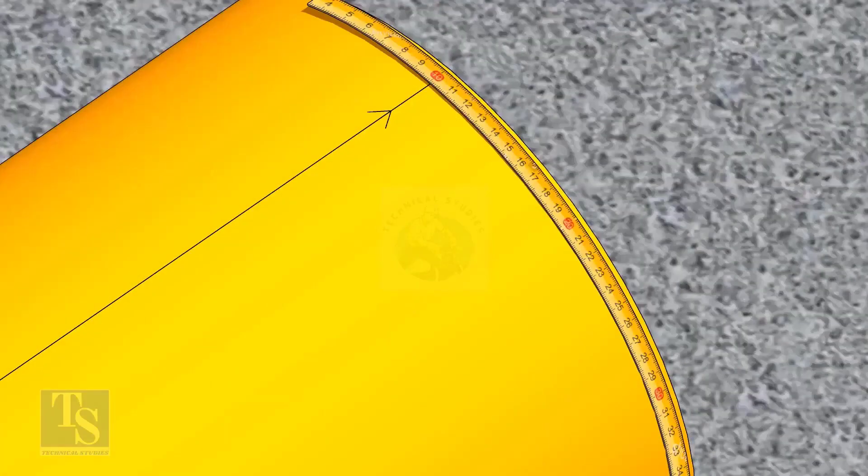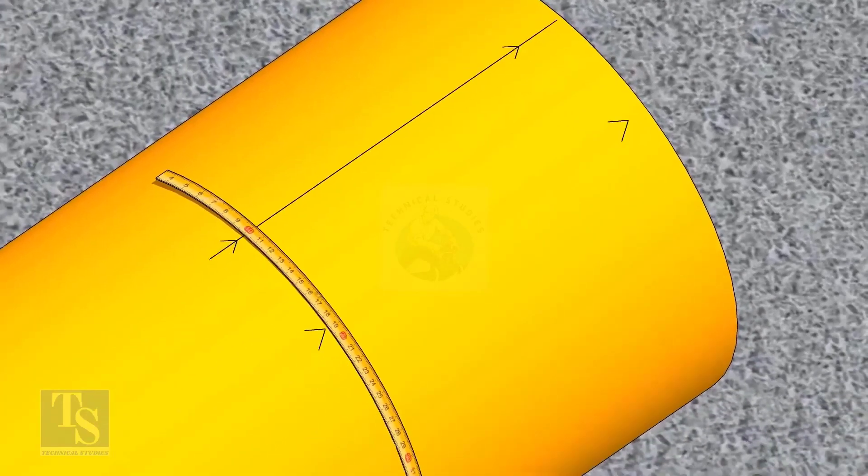Since we are rotating the flange 25 degrees anticlockwise, mark 88.5mm anticlockwise on the pipe, as shown.